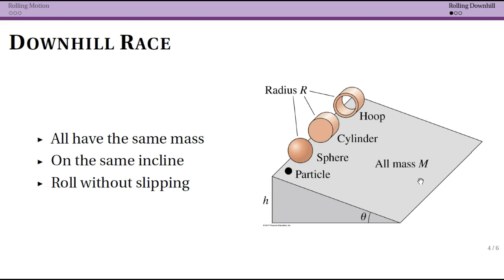Now you might quickly say, well, it's the same, why does it matter? And if you think that way, then the problem is that you're using the particle model. So if we approximate all of these objects as particles, it's true that they would all get to the bottom at the same time.